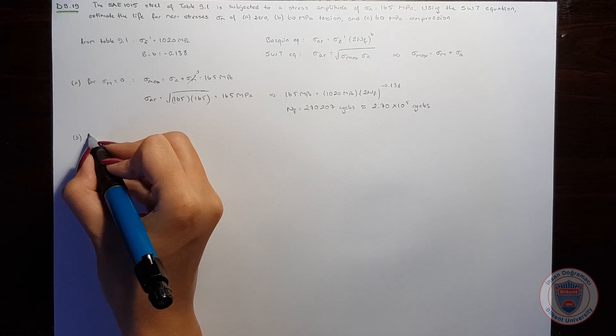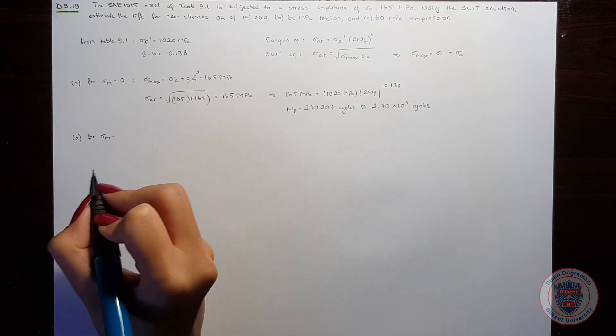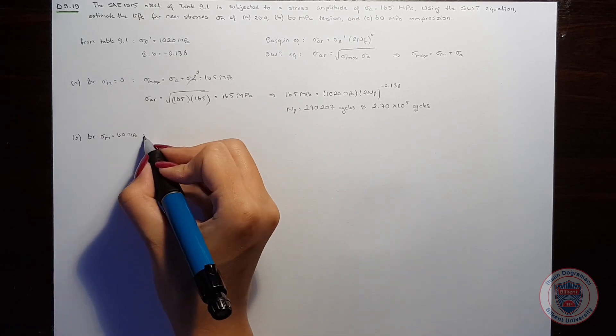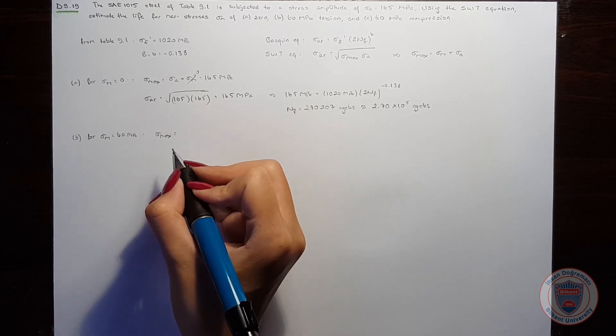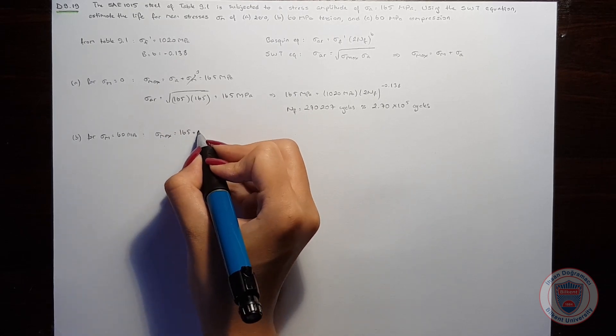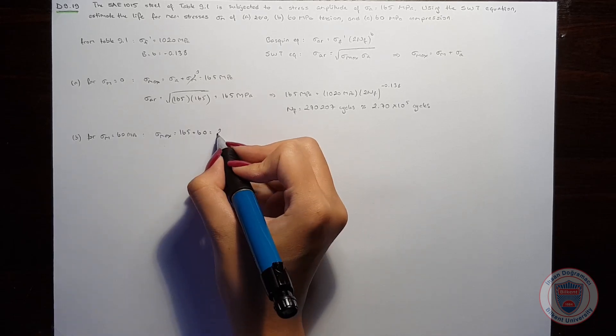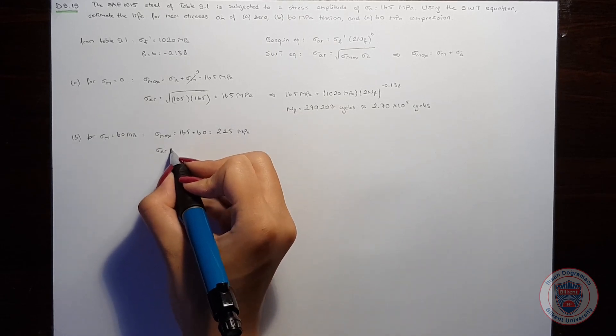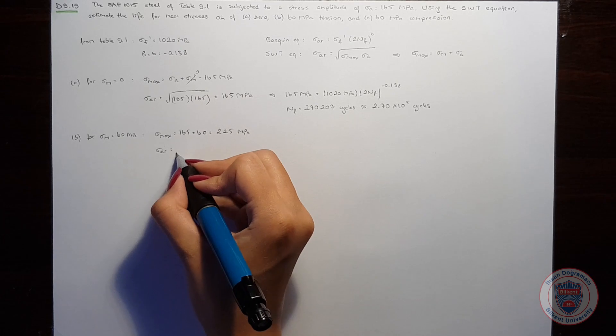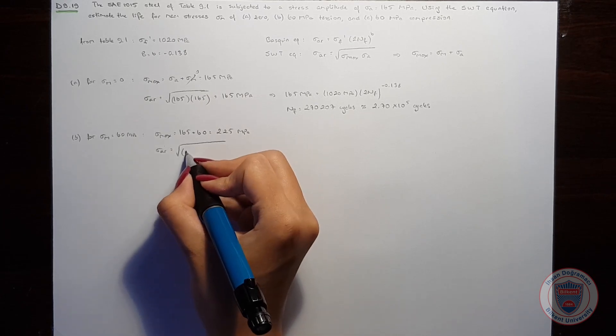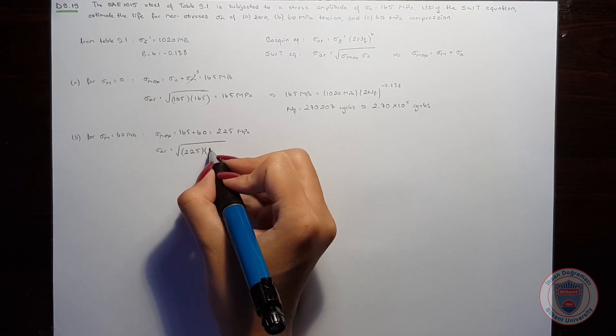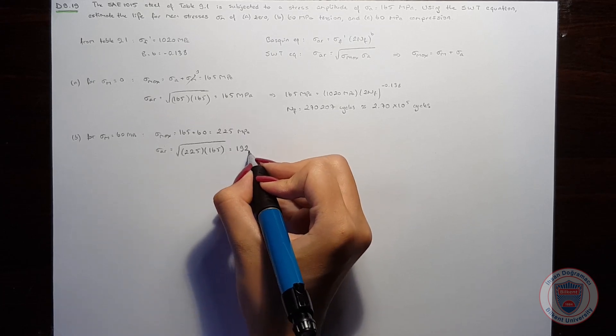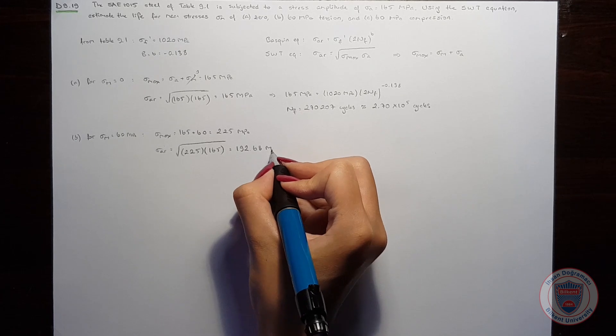Let's move to part B. For a mean stress which is 60 MPa tension, sigma max will be equal to 165 plus 60 and it will be 225 MPa. So that sigma AR will be equal to the square root of 225 times 165 MPa, and we will get 192.68 MPa.